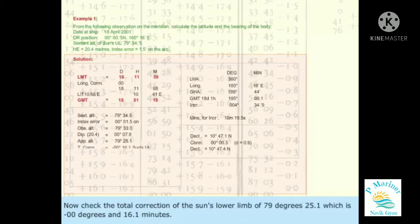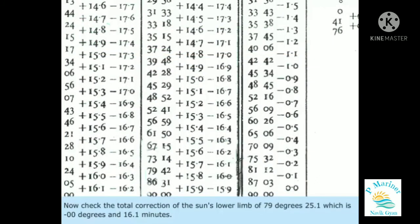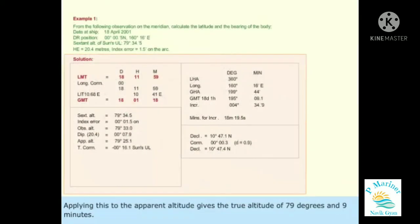Now, get the total correction for sun's lower limb for 79 degrees and 25.1, which is minus 0 degrees and 16.1 minutes. Applying this to the apparent altitude gives the true altitude of 79 degrees and 9 minutes.